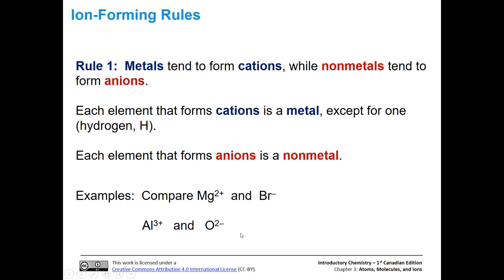Looking at aluminum and oxygen: aluminum is a metal and it generates a three plus cation, meaning it lost three electrons. The oxygen anion is two minus, meaning it gained two electrons. Oxygen is also a non-metal, along with bromine.